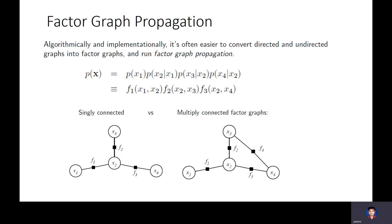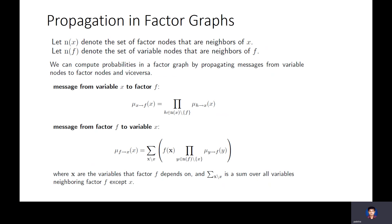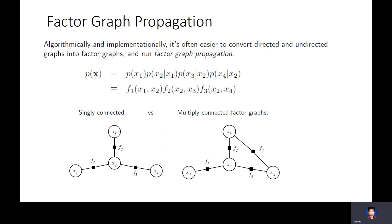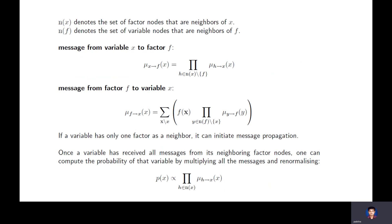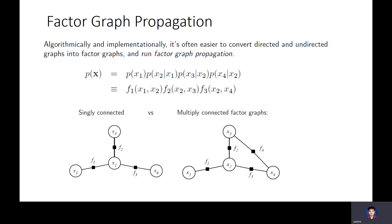Let N(X) denote the set of neighboring factor nodes of variable X. For example, N(X2) = {F1, F2, F3}. Let N(F) denote the set of neighboring variable nodes of factor F. So N(F2) = {X2, X3}. The message passed from variable X to factor F, denoted μ_{X→F}(x), is defined as the product of messages passed from all neighboring factor nodes H to X, excluding F itself.